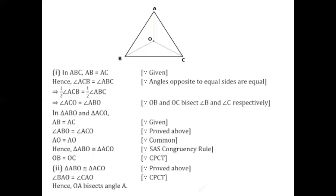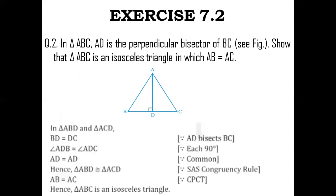I hope you all understood the solution to question number 1. Let's quickly get to question number 2 of Exercise 7.2. It says that in triangle ABC, AD is a perpendicular bisector of BC. A figure has been given wherein there is a triangle ABC and AD is a perpendicular bisector of BC. That means angle D is 90° and it is a bisector of BC, so BD will be equal to DC. We are supposed to prove that triangle ABC is an isosceles triangle where AB is equal to AC.